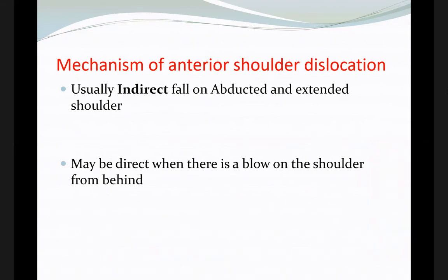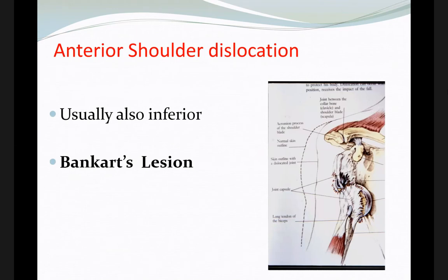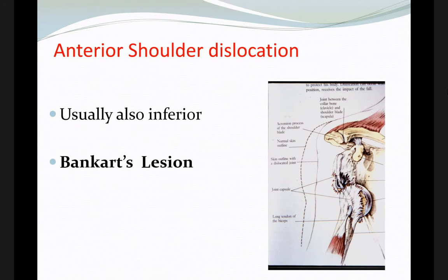The mechanism of injury for anterior shoulder dislocation is usually indirect: a fall on an abducted and extended shoulder with forceful external rotation causes anterior dislocation. It can rarely be caused by a blow from behind the shoulder. Usually the arm is extended and externally rotated — the shoulder pops anteriorly — or the patient falls on the shoulder with forceful backward movement.